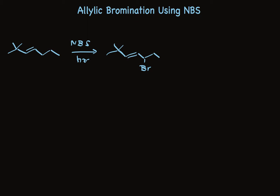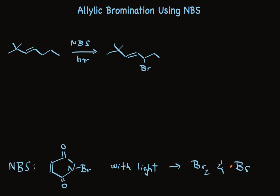The very first thing you'll ask is: what is NBS? It's a sort of complicated looking structure. It has especially weak nitrogen-bromine bonds, so light can selectively cleave that bond, which under these conditions results in two things: a low concentration of molecular bromine, and a catalytic amount of bromine radicals.